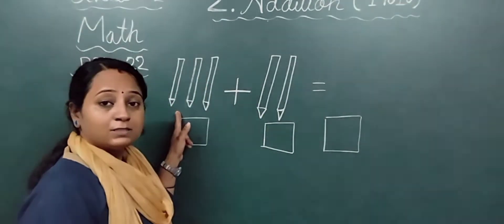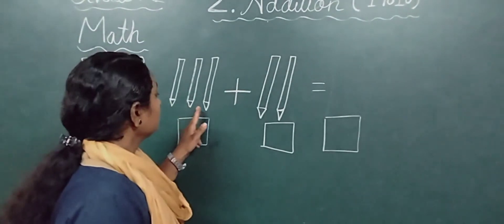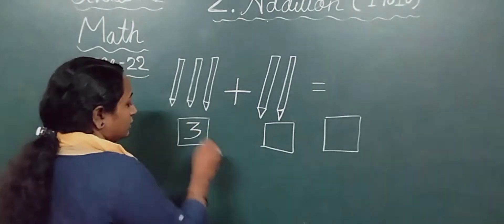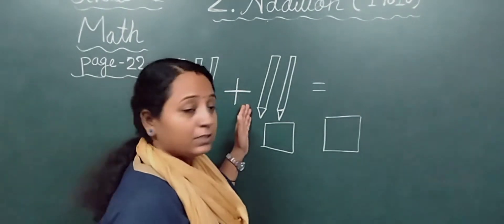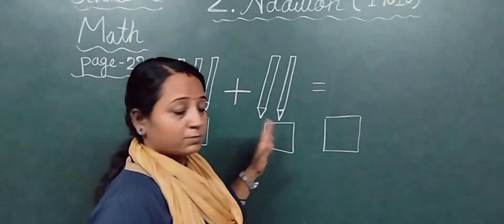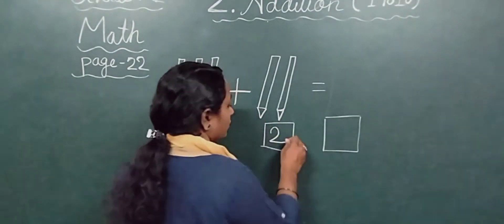How many pencils are there? Count 1, 2, 3. There are 3 pencils here, so I will write 3 in this box. Now here how many pencils? 1, 2. So in this box I will write 2.